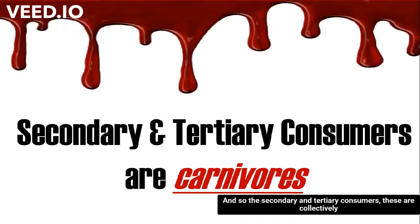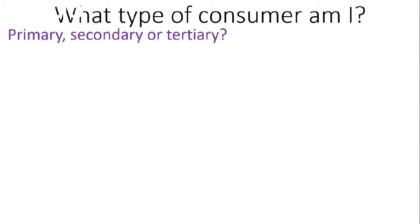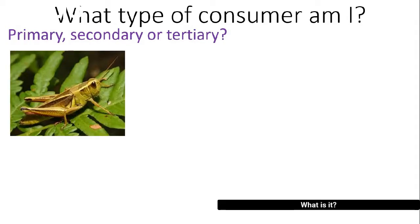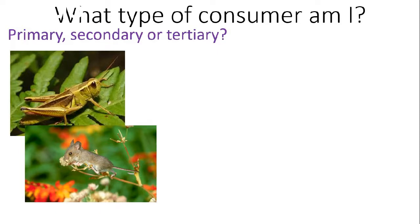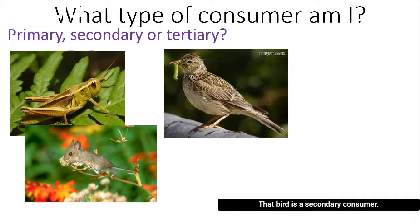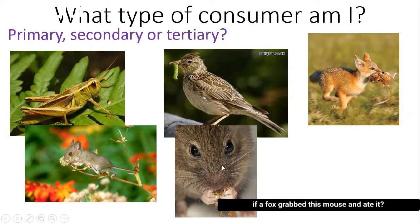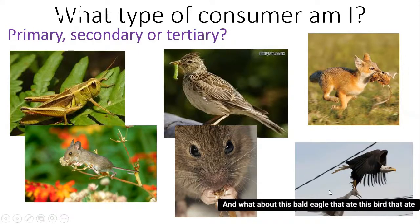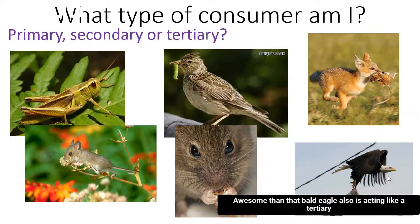Secondary and tertiary consumers are collectively called carnivores — they're eating meat. Quick practice: a cricket feeding on a leaf is a primary consumer. A mouse getting food from a flower is also a primary consumer. A bird that ate a caterpillar — and caterpillars eat grass and leaves — is a secondary consumer. A mouse that ate a cricket is also acting like a secondary consumer. If a fox grabbed and ate that mouse, the fox is acting like a tertiary consumer. And a bald eagle that ate a bird that ate a primary consumer fish is also acting like a tertiary consumer.